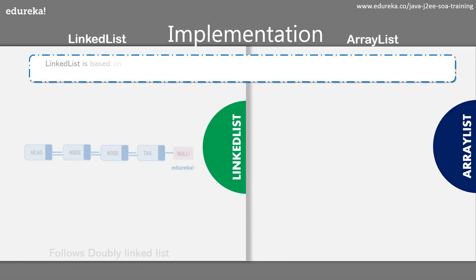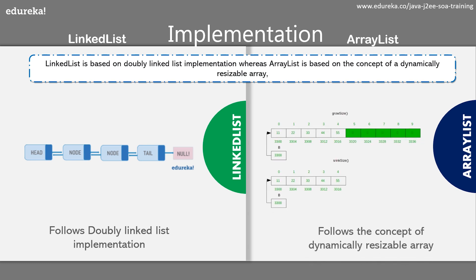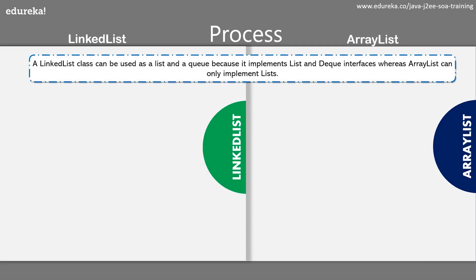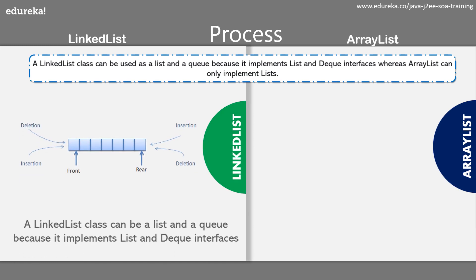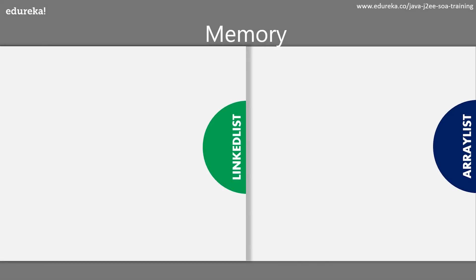Regarding implementation: linked list is based on doubly linked list implementation, whereas ArrayList is based on the concept of a dynamically resizable array. Concerning process: a linked list class can be used as a list and a queue because it implements both list and queue interfaces, whereas an ArrayList can implement only the list interface. This gives linked list an upper hand, as it can implement both a list and a queue interface.